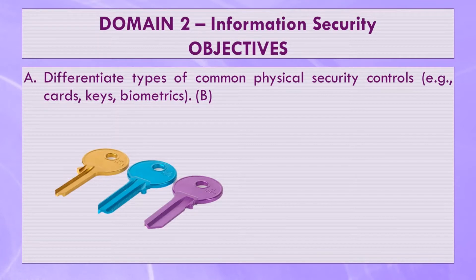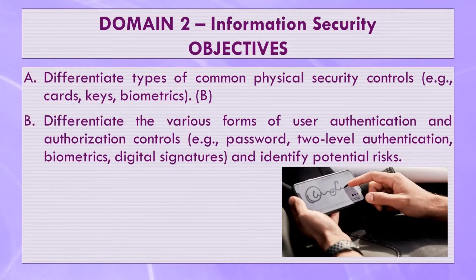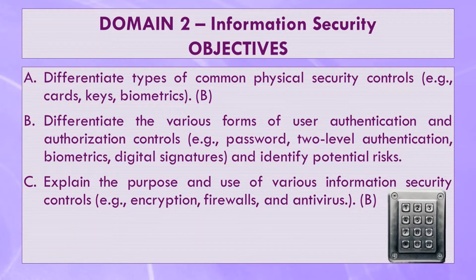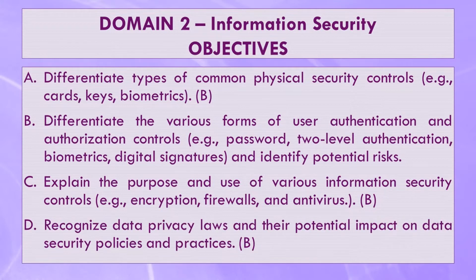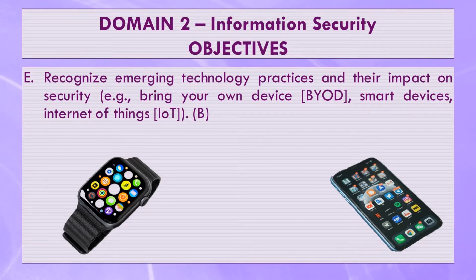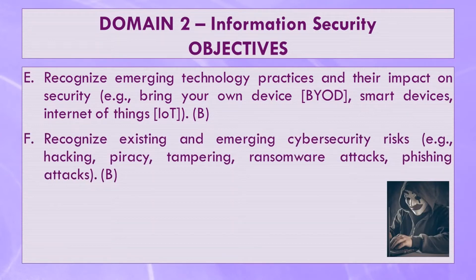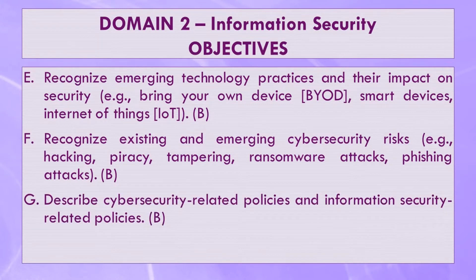The first objective is to differentiate the types of physical security controls such as access cards, physical keys, and biometrics like retina scans and facial recognition. The second objective is to differentiate the forms of user authentication and authorization controls and identify potential risks. Third, explain the purpose and use of information security controls like encryption, firewalls, and antivirus software. Next, recognize data privacy laws and their potential impact on data security policies and practices. Recognize emerging technology practices and their impact on security. Recognize existing and emerging cybersecurity risks. Finally, describe cybersecurity-related policies and information security-related policies.